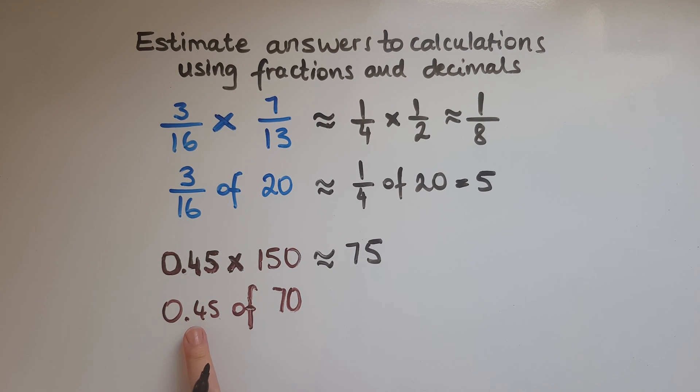And 0.45 of 70, we round that to 0.5, so this is about 35.